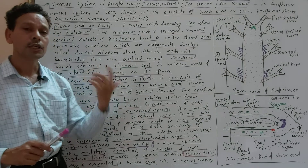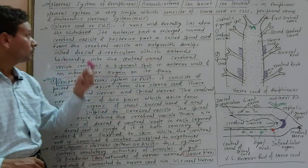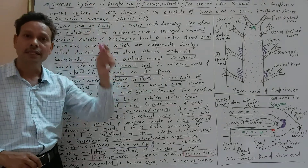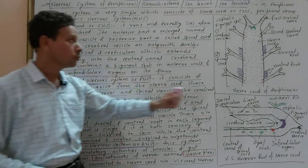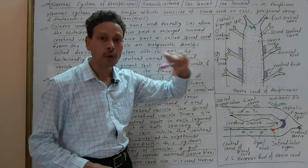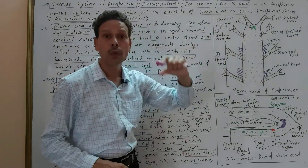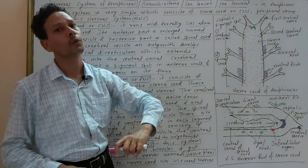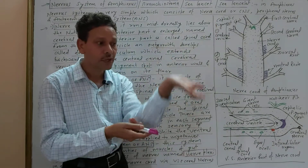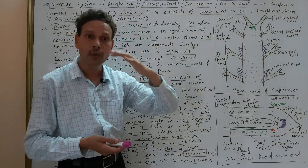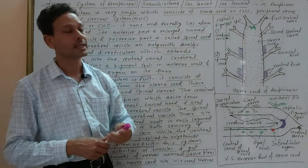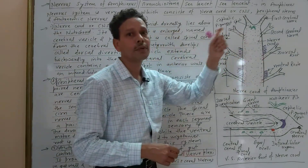The central nervous system lies in the central part of the body. It is a hollow dorsal tubular nerve cord that runs in the mid-dorsal part of the body, just above the notochord. It lies on the mid-dorsal side of the body. This hollow dorsal nerve cord is the CNS.